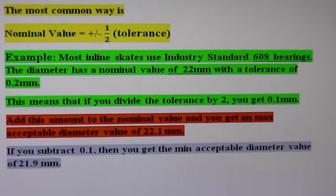This means that if you divide the tolerance by 2, you get 0.1 millimeter. Add this amount to the nominal value and you get a maximum acceptable diameter value of 22.1 millimeters. If you subtract 0.1, then you get the minimum acceptable diameter value of 21.9 millimeters.